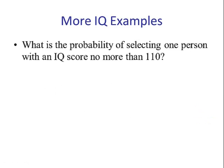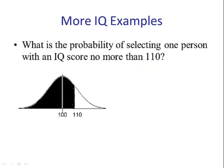What is the probability of having one person with an IQ score no more than 110? No more than 110 means less than. So we draw our picture. Mean is 100 and it's in the middle. 110, and no more means less than.